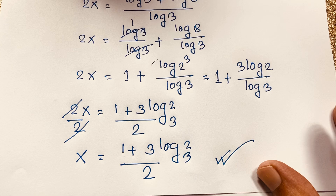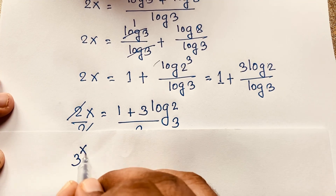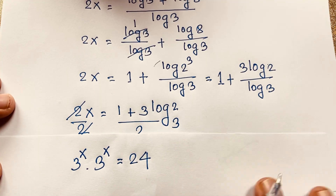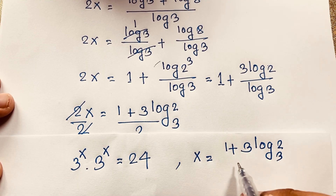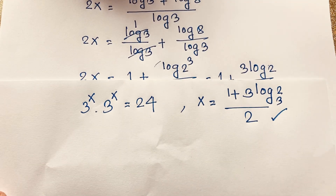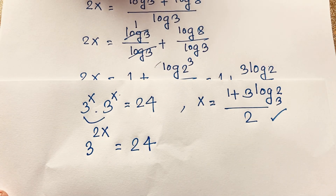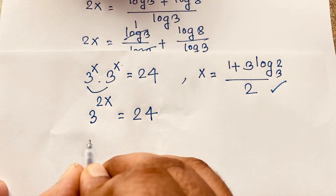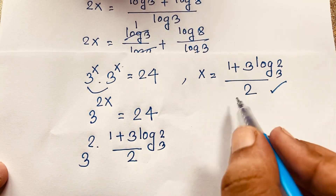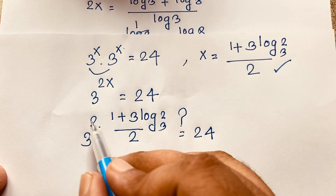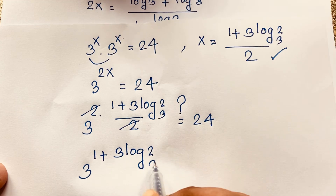Now let's verify our question. It will be 3 to the power x times 3 to the power x equals 24 — this is our question. Here x equals (1 plus 3·log₃2) over 2. So I put this value in. Evaluating this expression, it will be 3 to the power x plus x, which is 3 to the power 2x equals 24. Now here, 3 to the power 2 times x, where x equals (1 plus 3·log₃2) over 2, equals 24. Then these 2s cancel out, giving 3 to the power (1 plus 3·log₃2) equals 24.